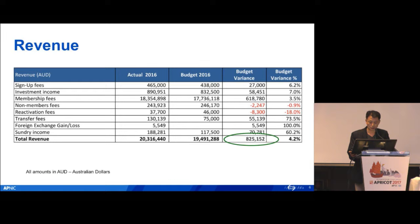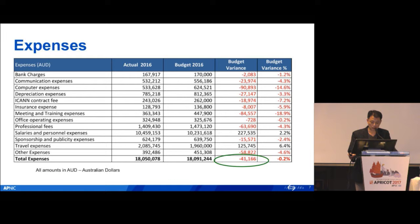Here is the detail for the revenue. In 2016, actual revenue is up to $20.3 million. Our budget was $19.5 million, so we were 4.2% above budget. The actual expense for 2016 was almost close to our budget — only 0.2% variance.